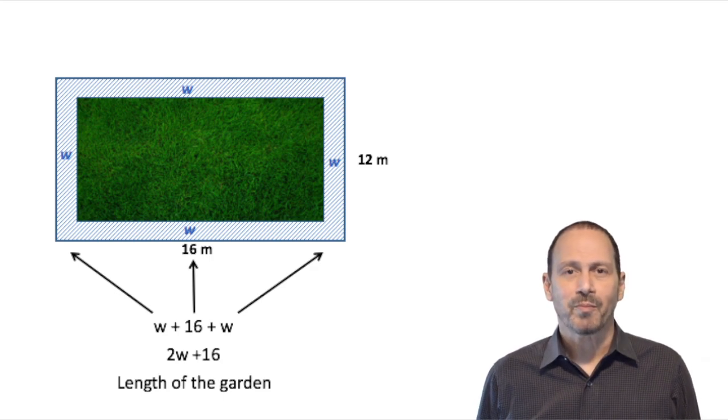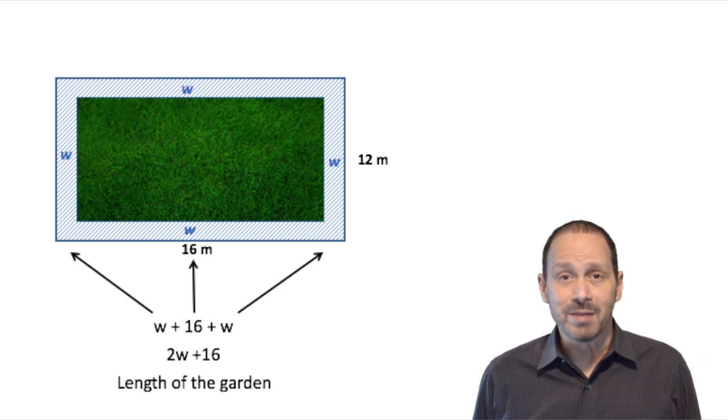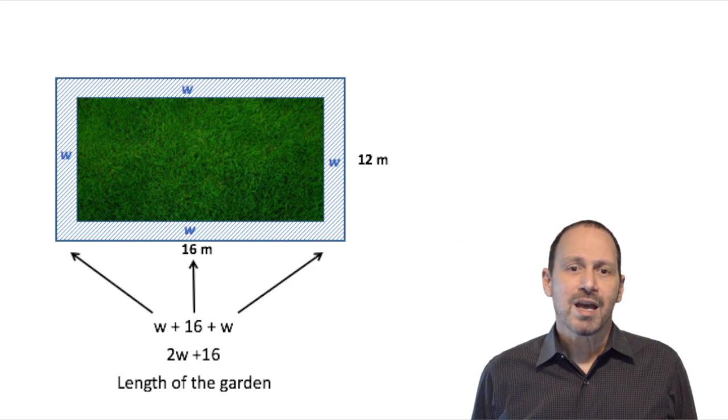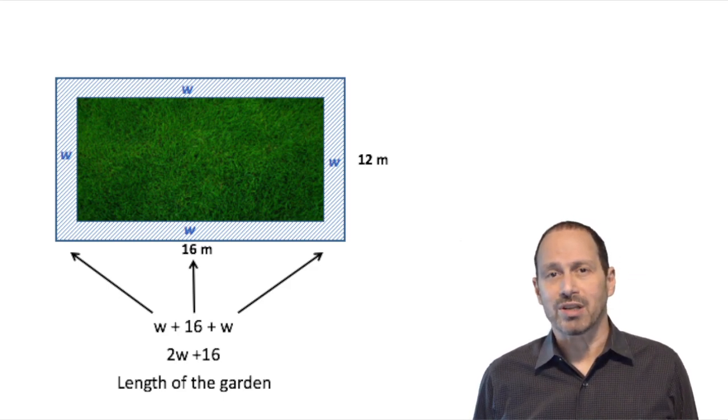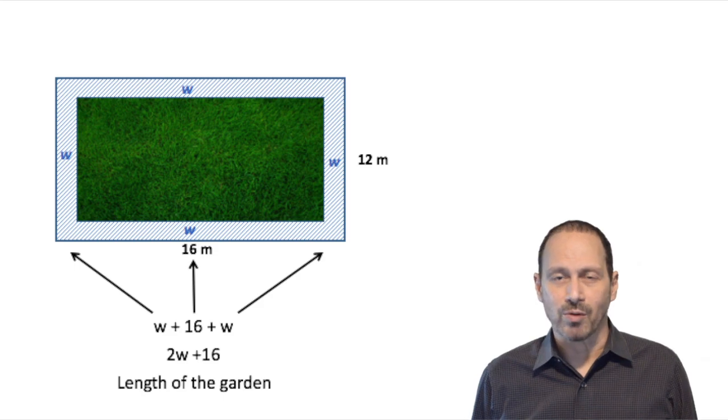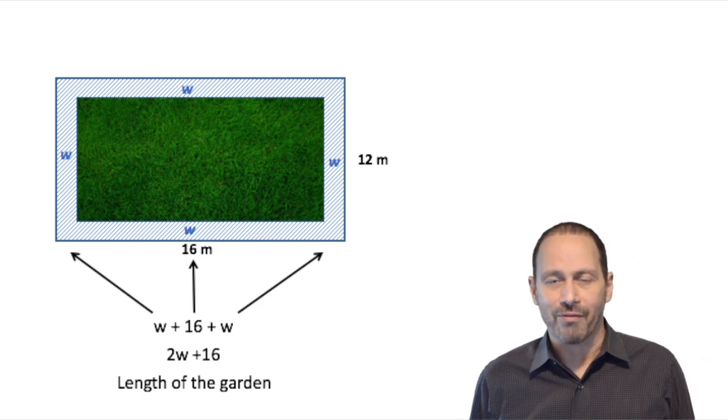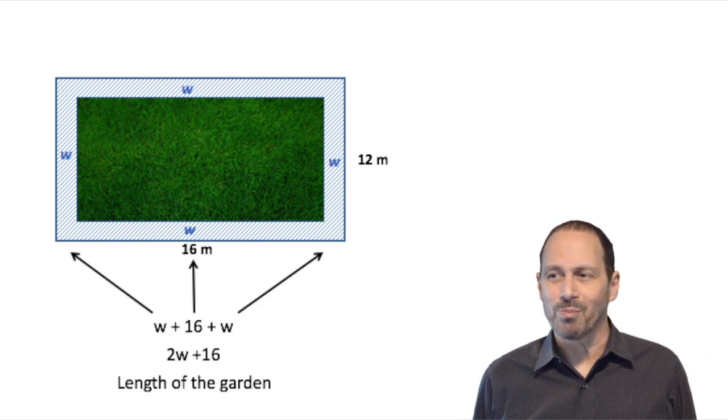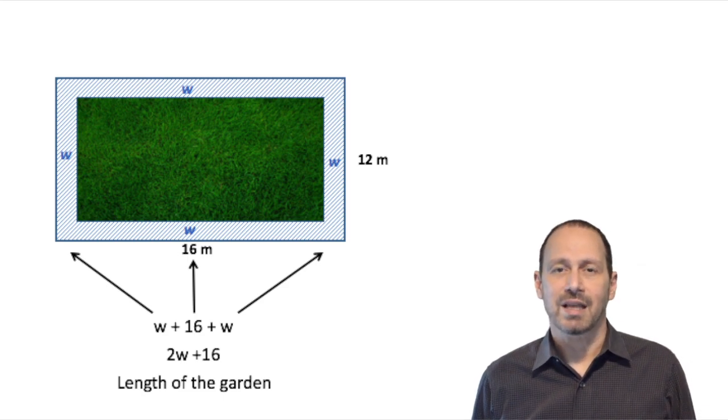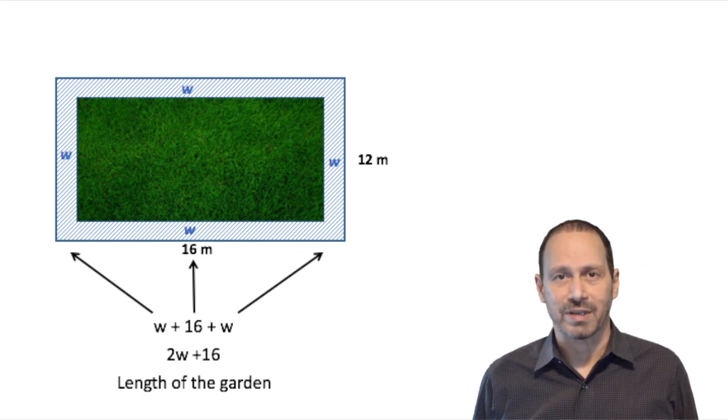We can simplify this as 2W plus 16. That would be our representation of the length. That would be the quantity that represents the length of the rectangle.